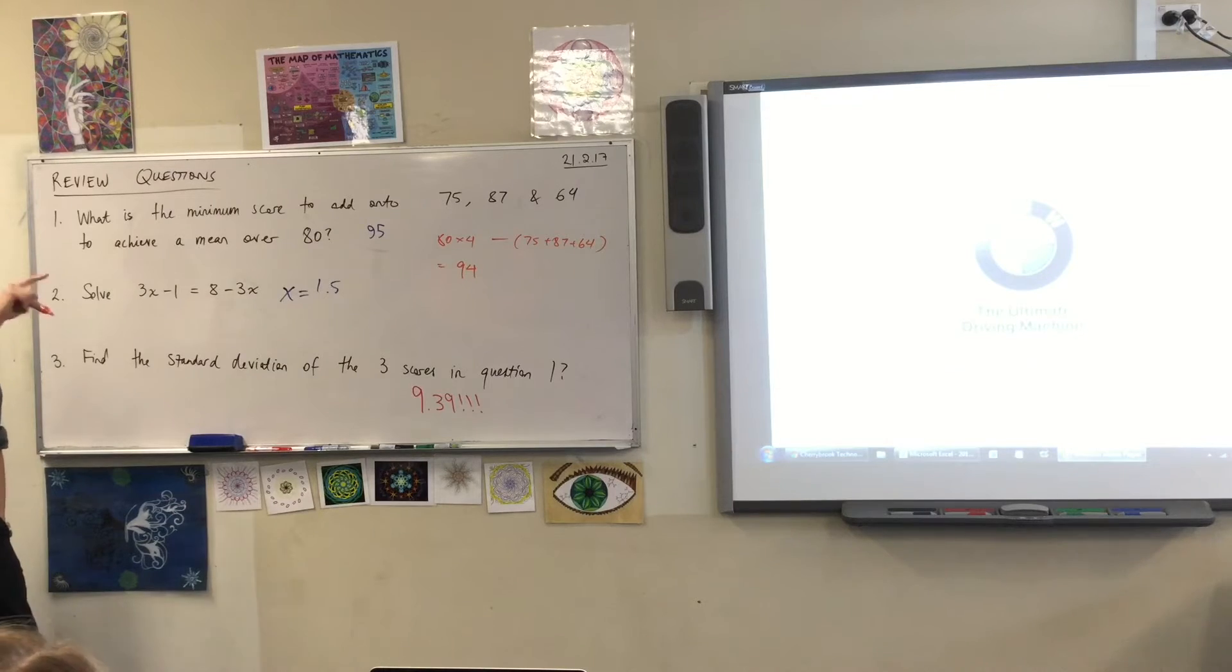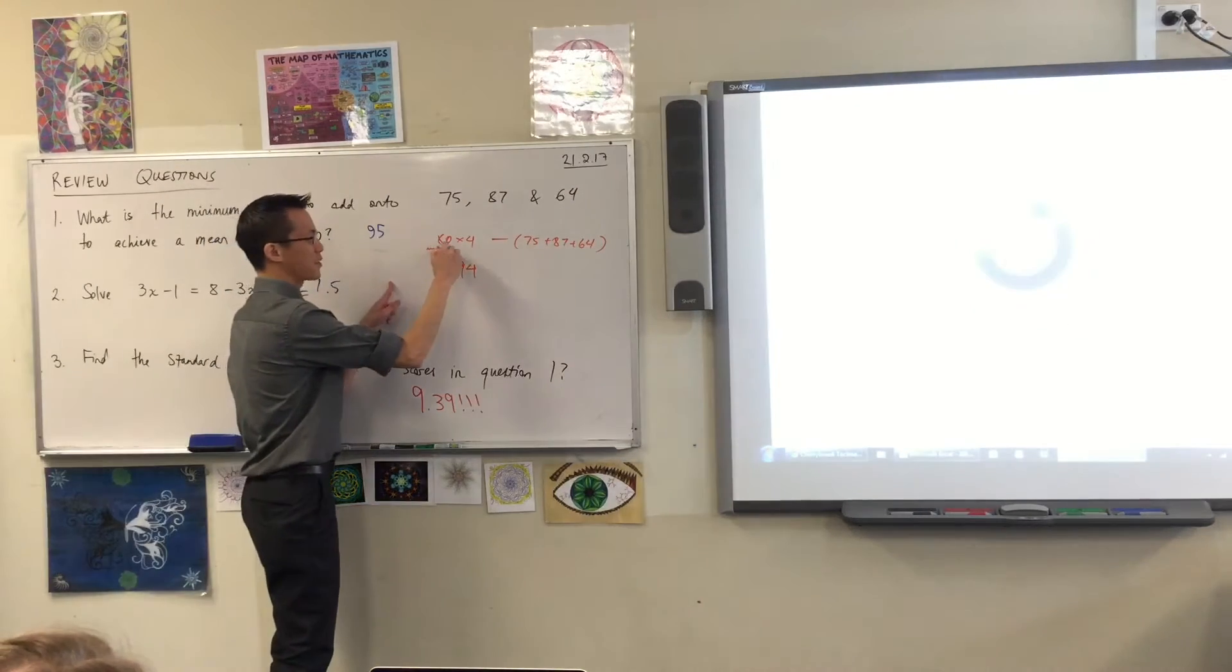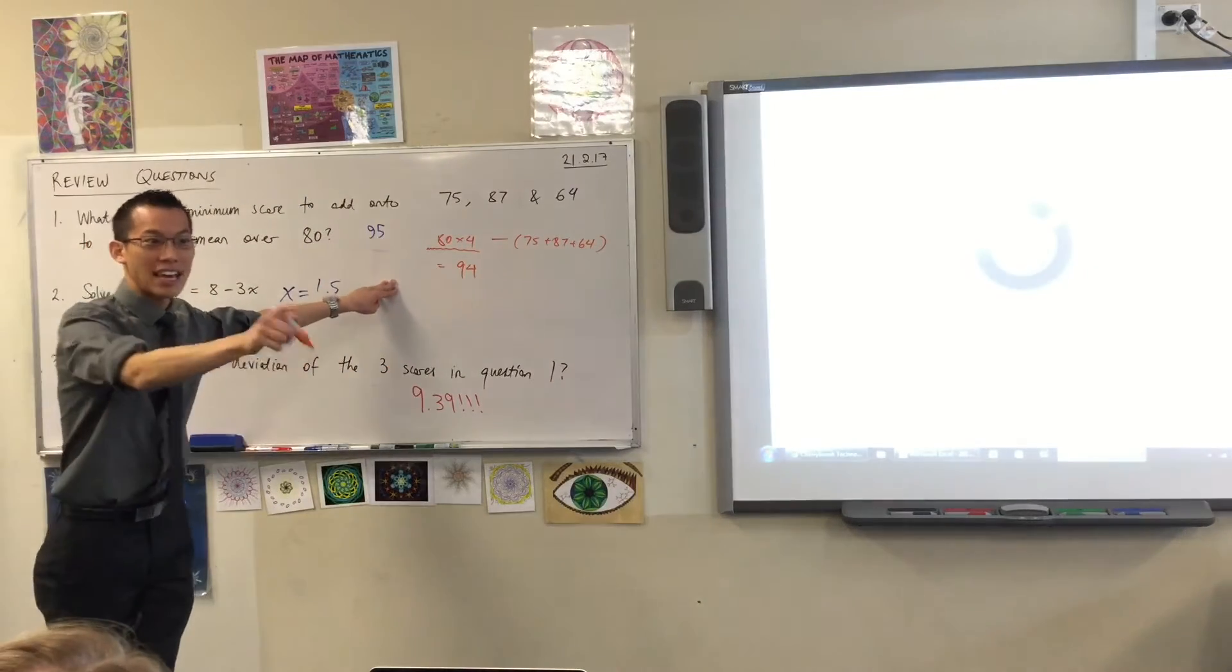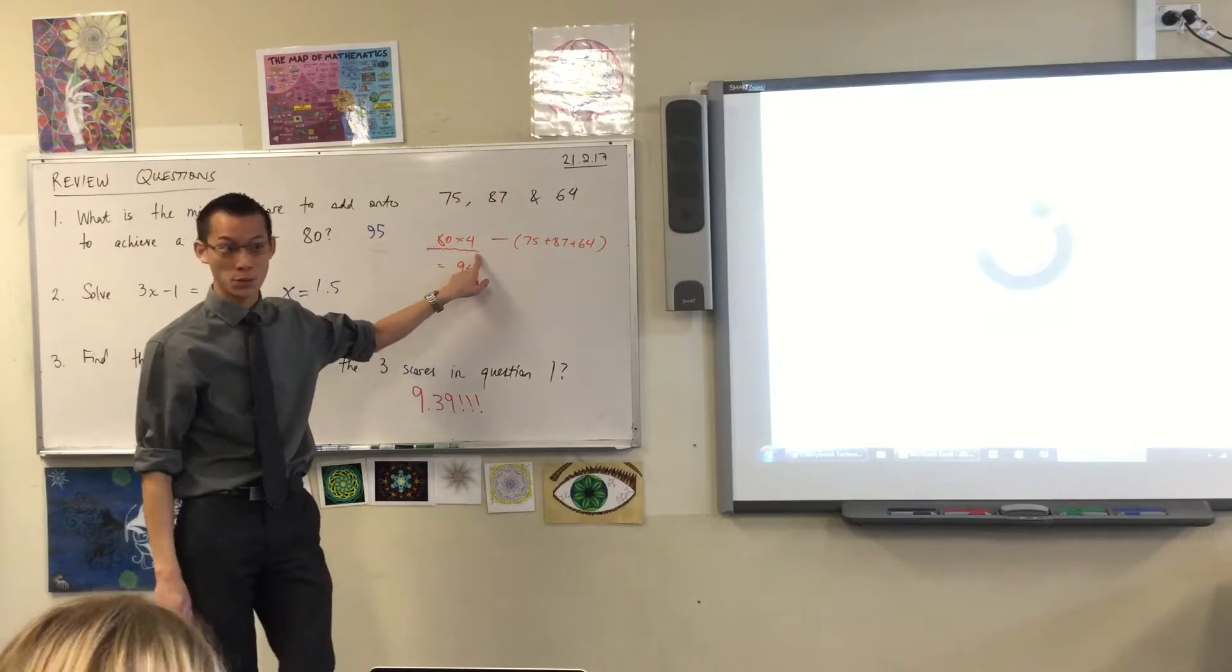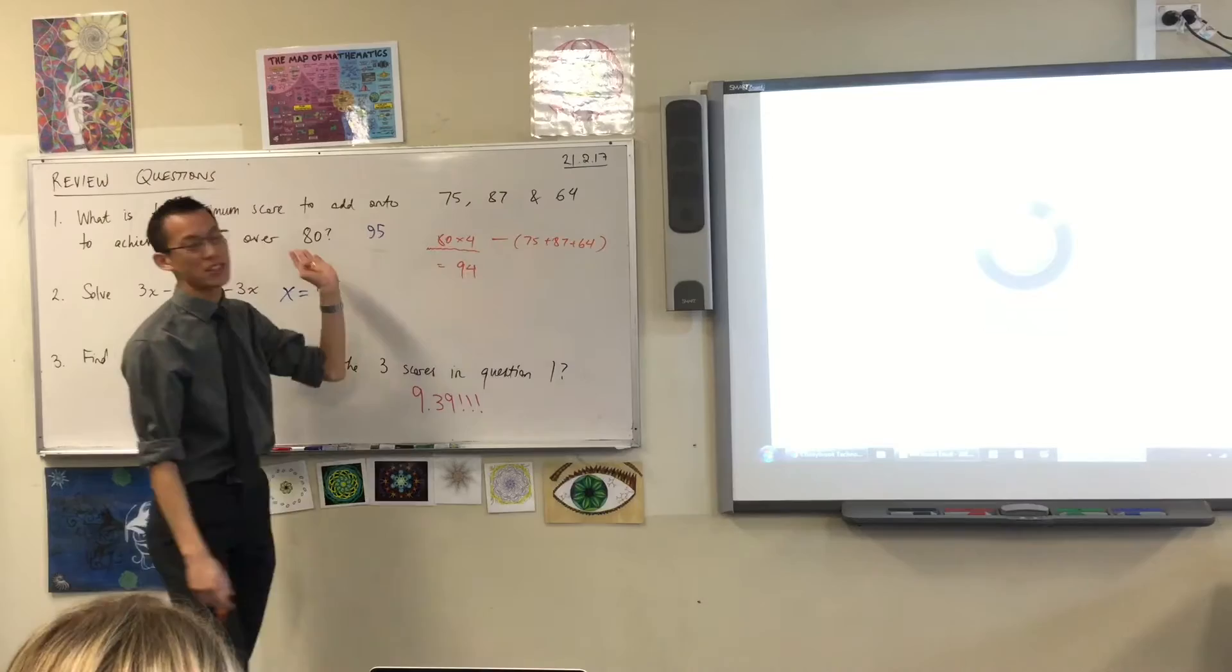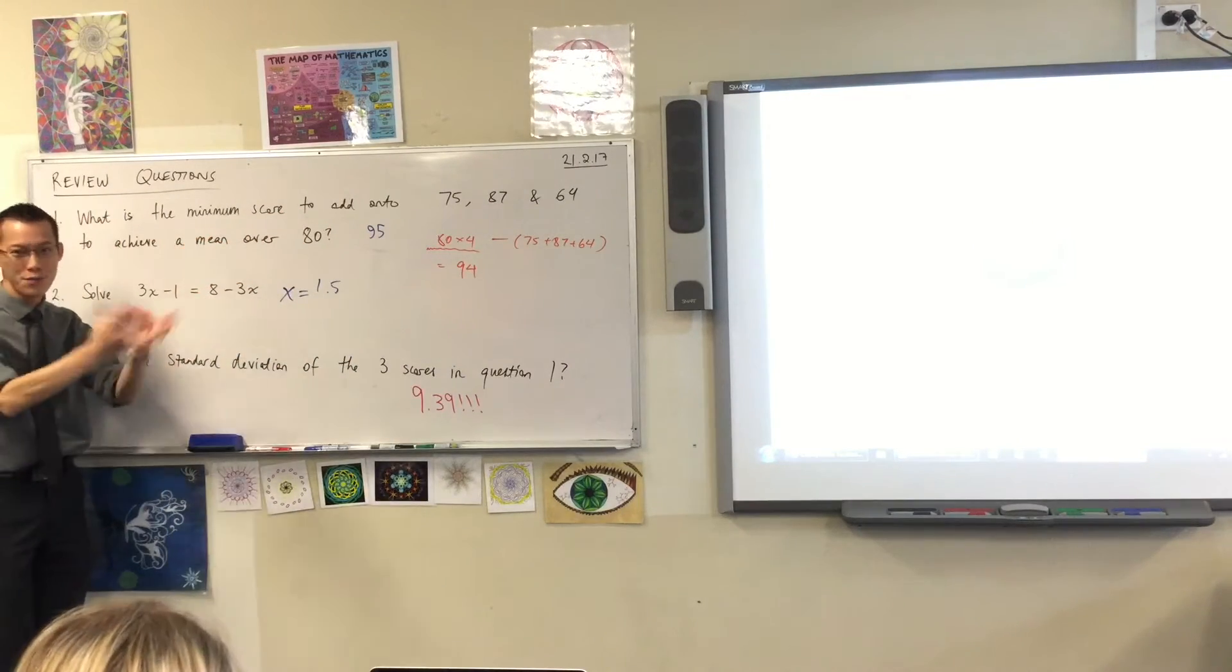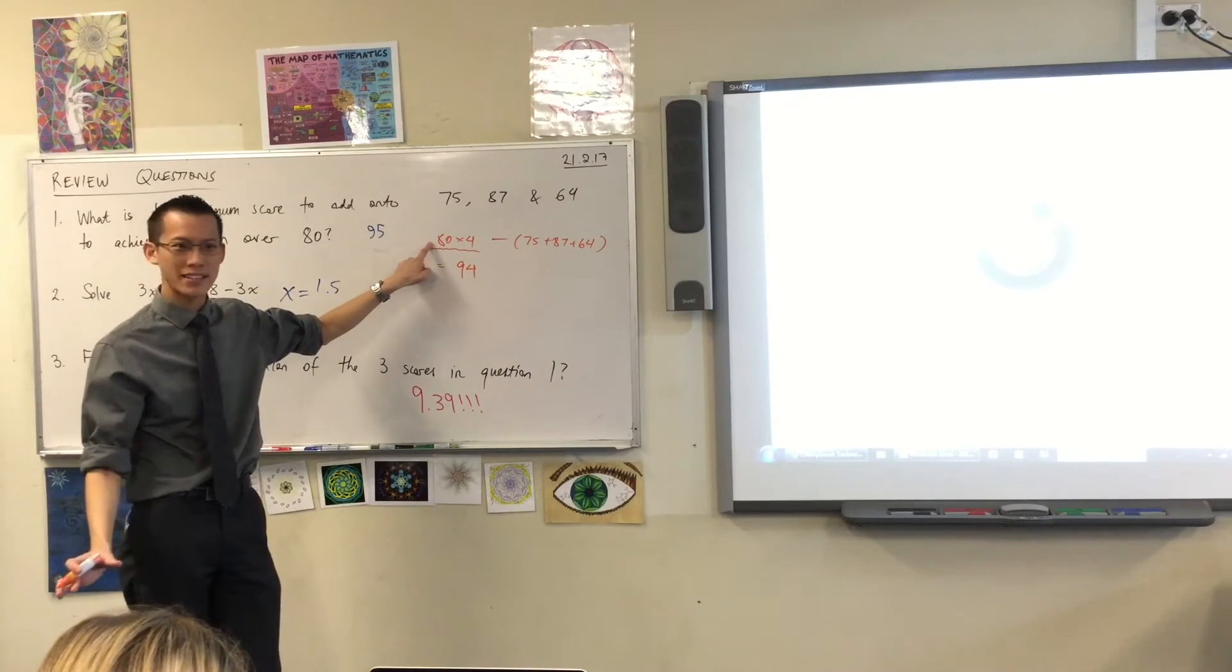So let's just make sure we know what's going on here. What is this? What's this about? What does that help us work out? The mean you want to achieve. And when you add a score on to here you're going to have not 3 but 4 scores. Okay, so therefore by the time you add on to that 4 score, if you want a mean of 80 over those four scores, they'll need to add up to 320. Does that make sense?